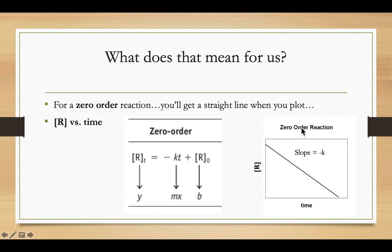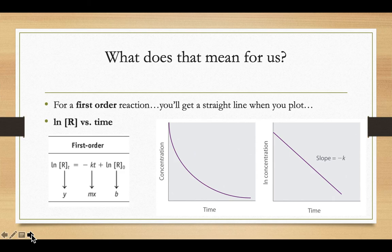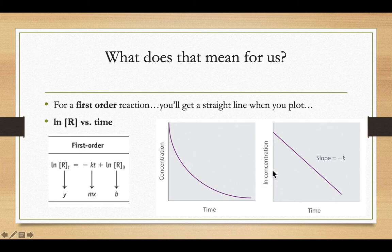You wouldn't have to do a whole bunch of trials or get consistent timing. Just plot your information, and if you get a straight line for concentration versus time, you know it's a zero order reaction. If you have a first order reaction and try to plot concentration versus time, you would not get a straight line — you'd get a curve. So because you don't get a straight line for concentration versus time, that tells you the reaction is not zero order.